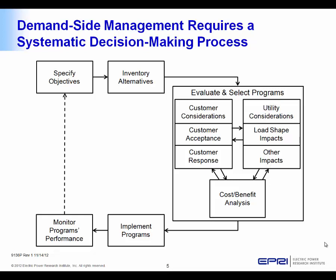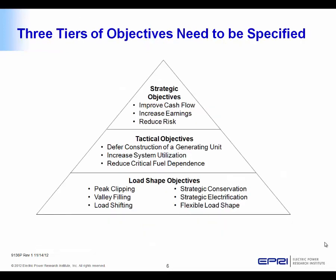On the utility side, that could be the load shape impacts from utility actions or the mix of generation they might have now or could modify for the future. And out of those two, we do a cost-benefit analysis and make comparisons, choose programs, potentially implement some of them, and then monitor the performance of the program with an idea towards modifying the original objectives in an ongoing integrated resource planning process.